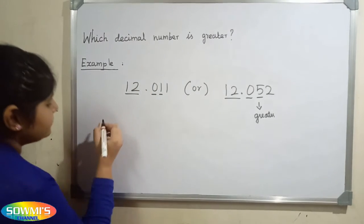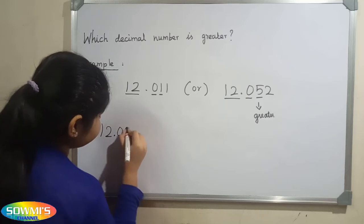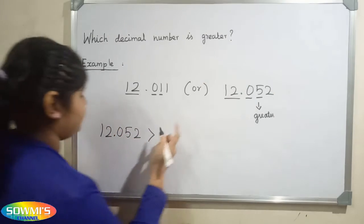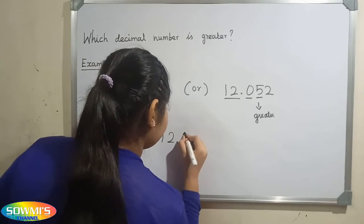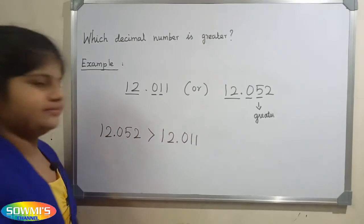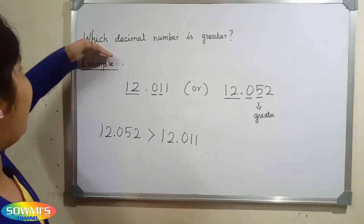12.052 is greater than 12.011. Hope you friends all understood how to find which decimal number is greater.